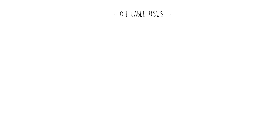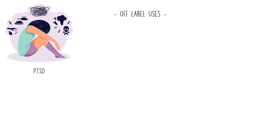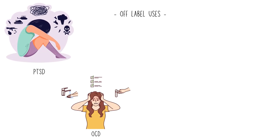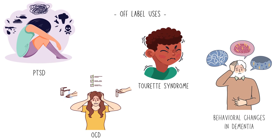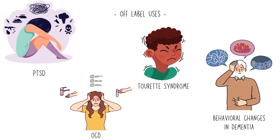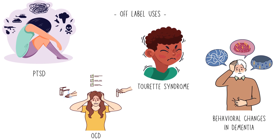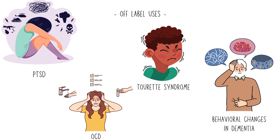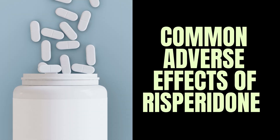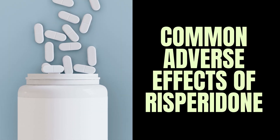Off-label uses include post-traumatic stress disorder, obsessive-compulsive disorder, Tourette's syndrome, and behavioral changes in dementia. In this video, our primary goal is to explore the common adverse effects of risperidone.